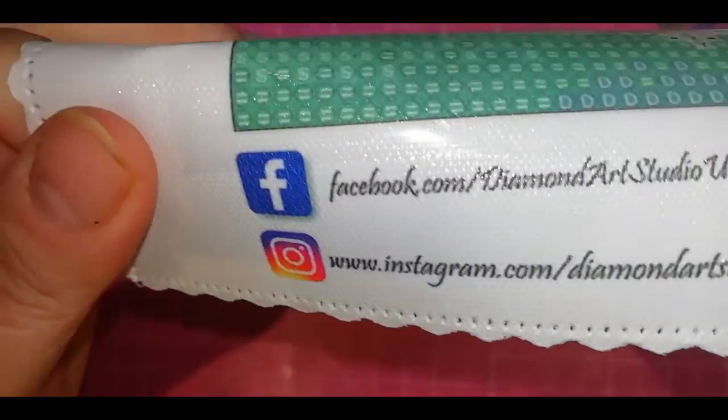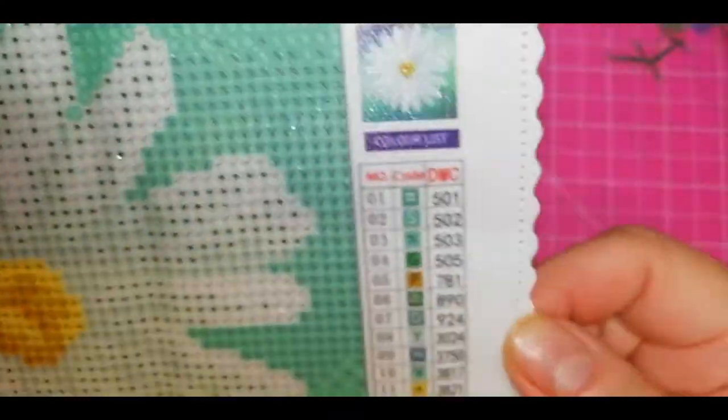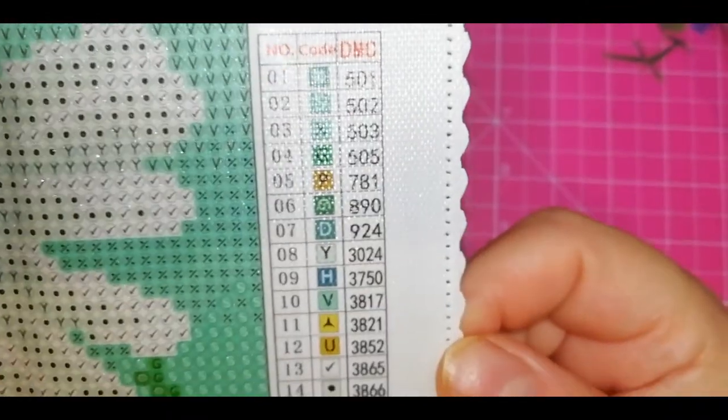They have all their info down there. Their Facebook, Instagram, their website. This is from the platinum collection. They have the thumbnail and the DMC legend on both sides.